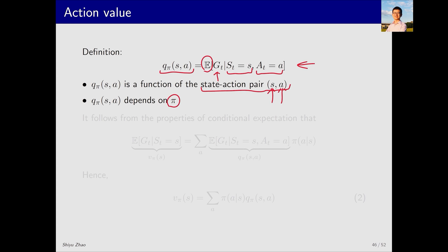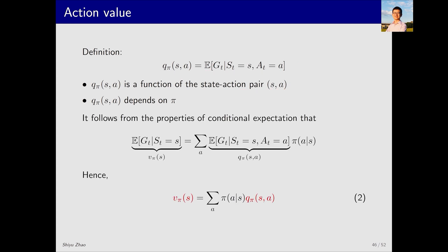Let's look at the mathematical expression for action value and its relationship to state value. First we have the state value v_pi(s), which is defined as the average return starting from state s. It can be represented in this form: for many actions a, the probability of choosing a specific action a is this, and the average return after choosing this action a is this.